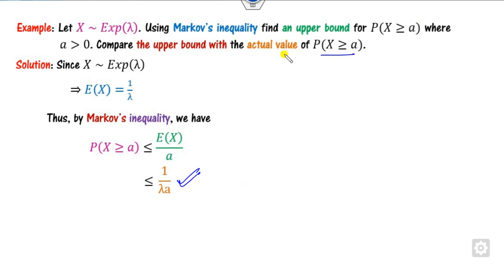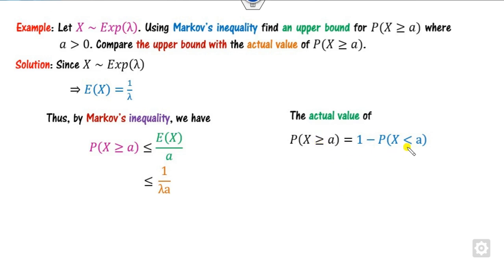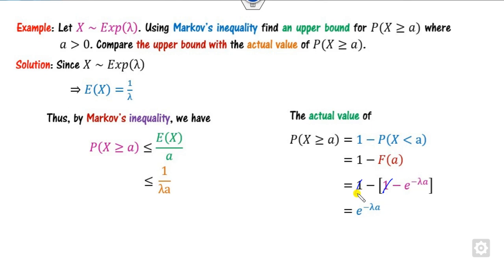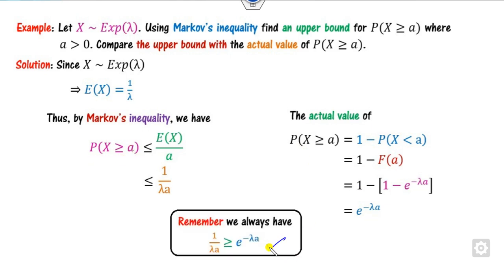Now compare the upper bound with the actual value. The actual value is the CDF: P(X ≤ A) from minus infinity to A using the PDF of the exponential distribution. Using the CDF of the exponential distribution, substitute X = A: one will cancel out, giving the result. After substituting, we verify this inequality always holds true.